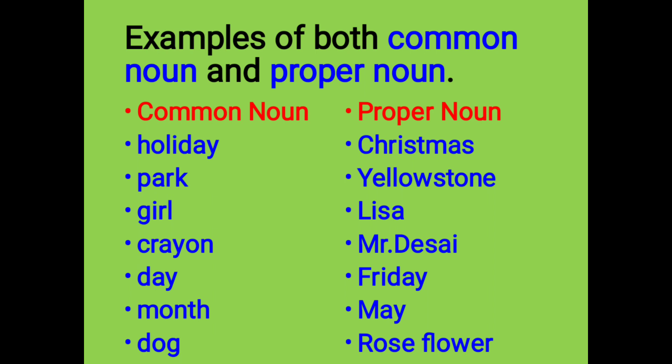If you see the examples of proper noun, it is written in capital letters — the first alphabet is in capital letters. Examples: Christmas, Yellowstone, Lisa, Mr. Desai, Friday, May, Roseflower.